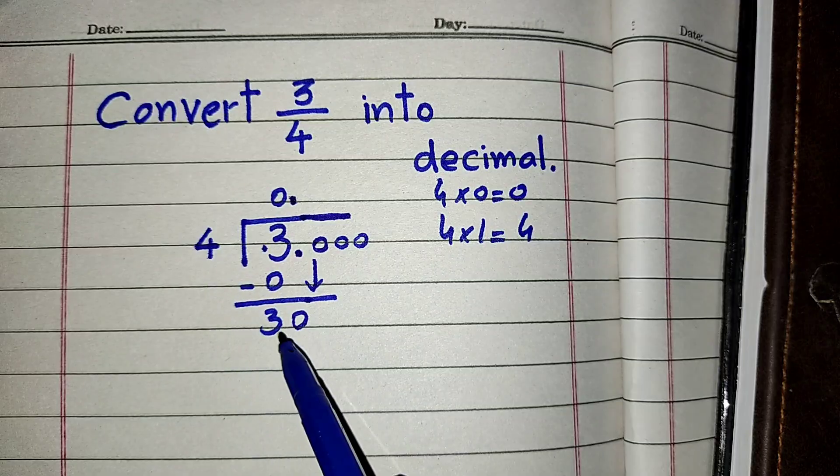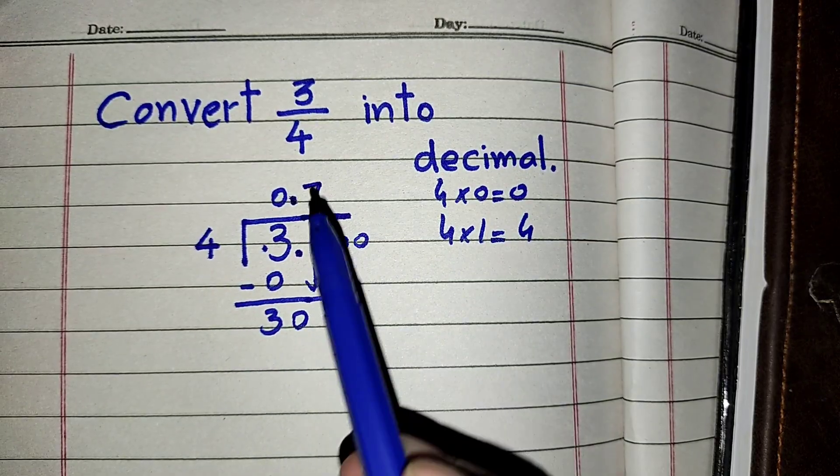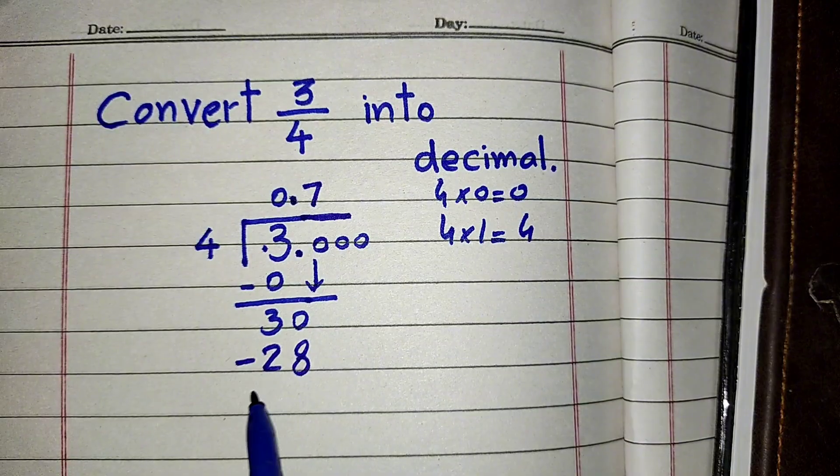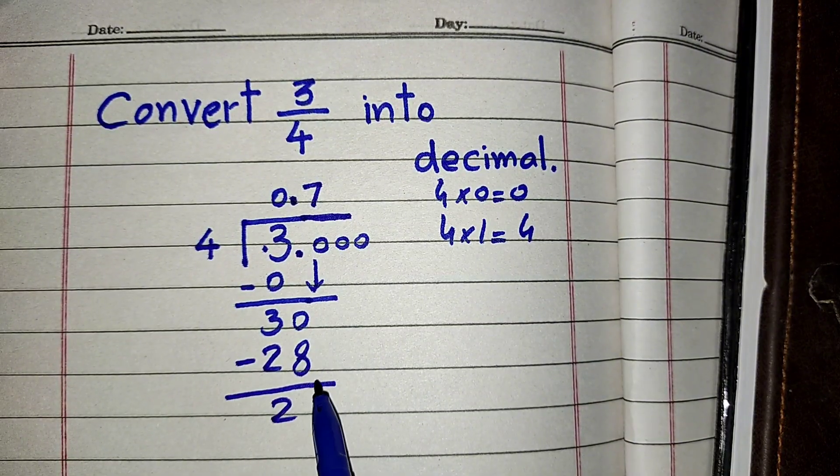Now you can see that 4 times 7 is 28, so we can put here 4 times 7 is 28. After subtraction we get 2, and again we have to bring down another zero, so we have 20.